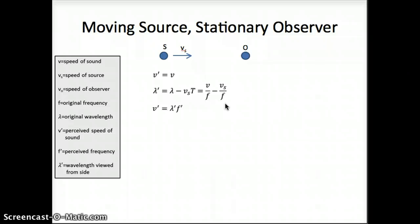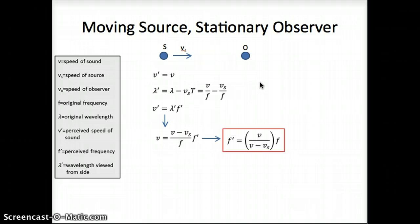The new frequency, I can't write that down yet. That's what we're trying to figure out. But I can impose v prime equals lambda prime times f prime and plug in my expressions here for v prime and lambda prime. Doing that, I get v equals v minus v_s over f times f prime. If I rearrange this to solve for f prime, I get that the new frequency, the Doppler shifted frequency f prime, equals v divided by v minus v_s times the original frequency.